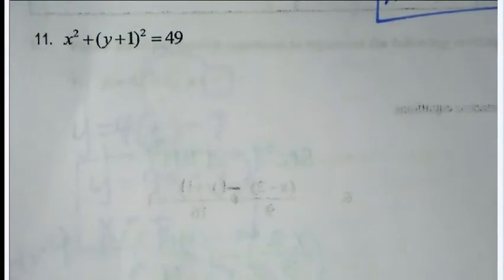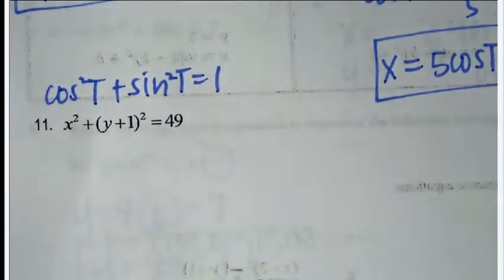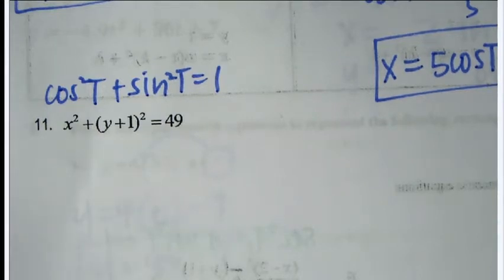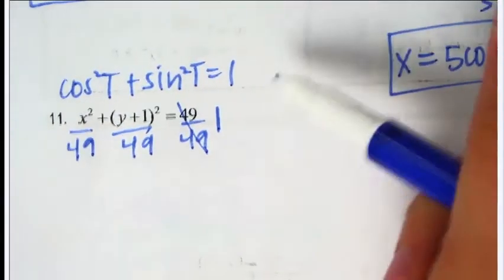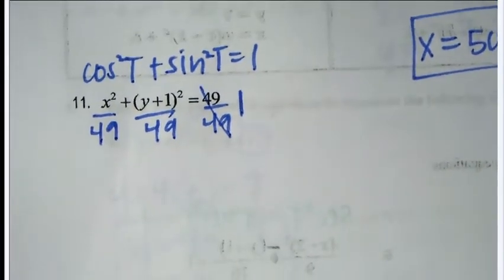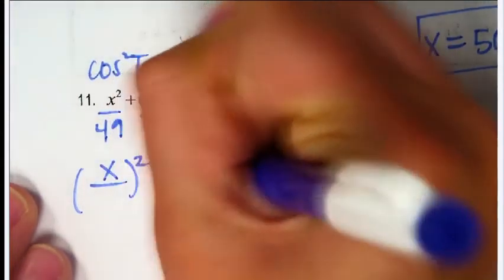Number 11 uses addition so we use cosine squared plus sine squared equals one, but this equation doesn't equal one — it equals 49. To make it equal one, divide everything by 49. Now 49 over 49 becomes 1, and it looks like what we're used to. Take out the squares — both denominators become 7.